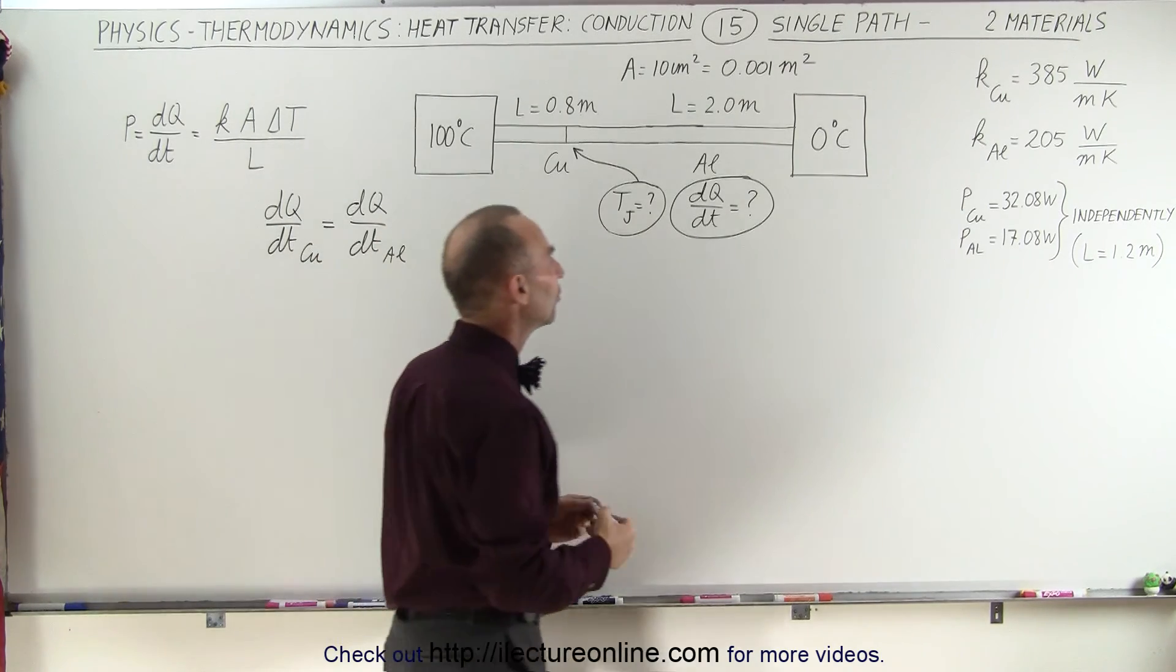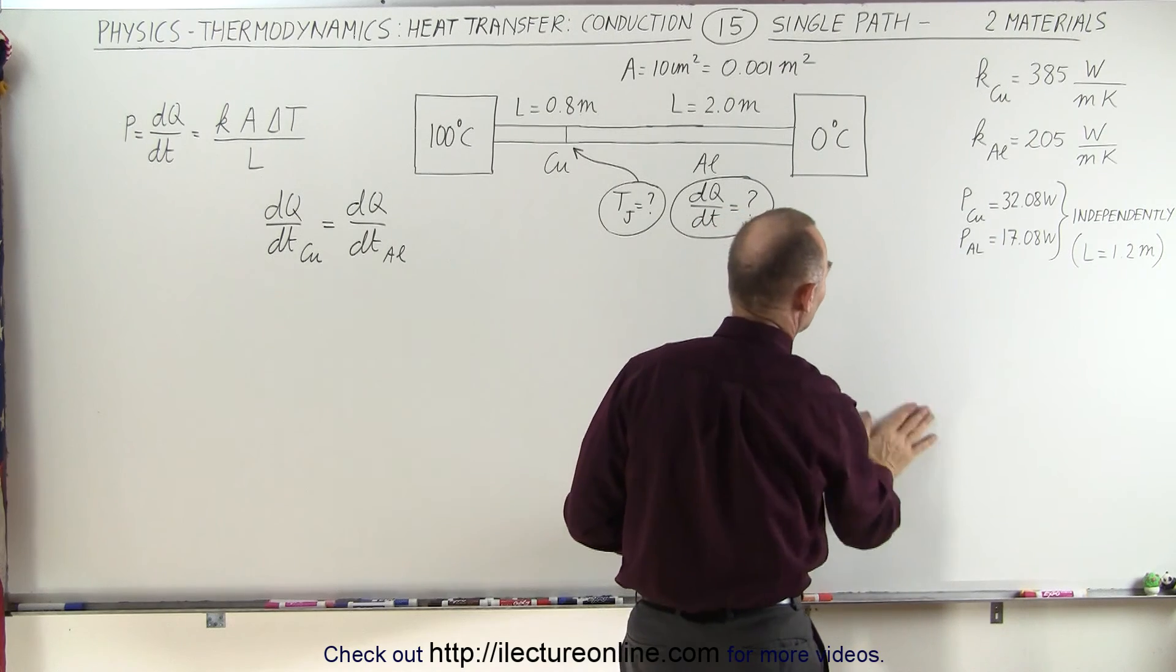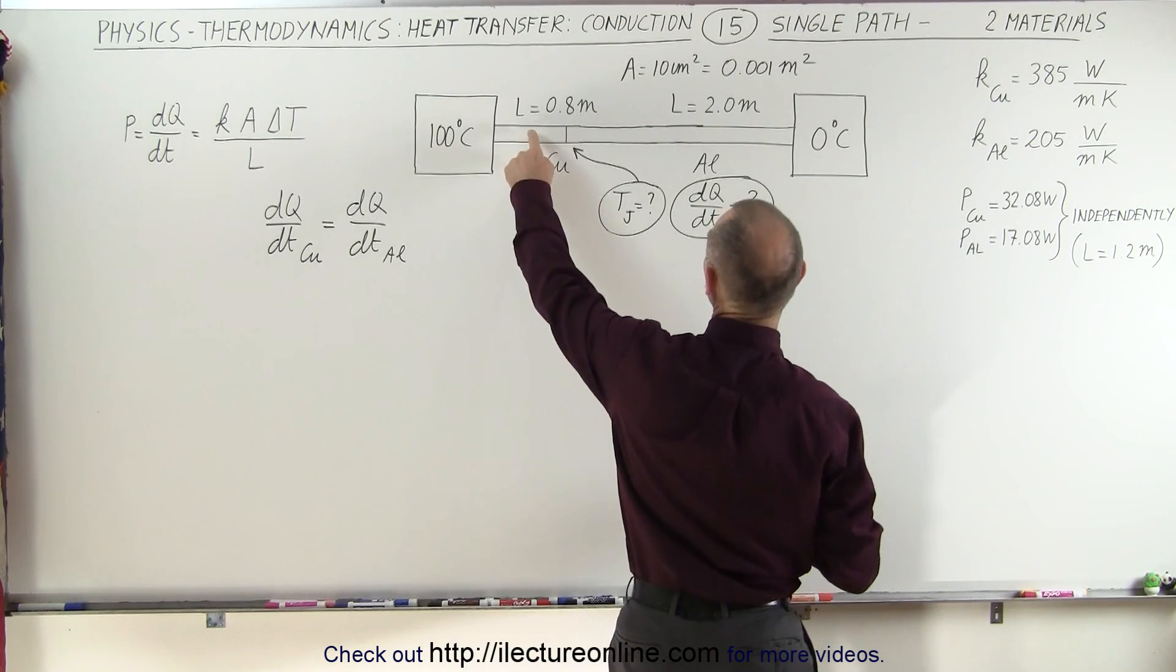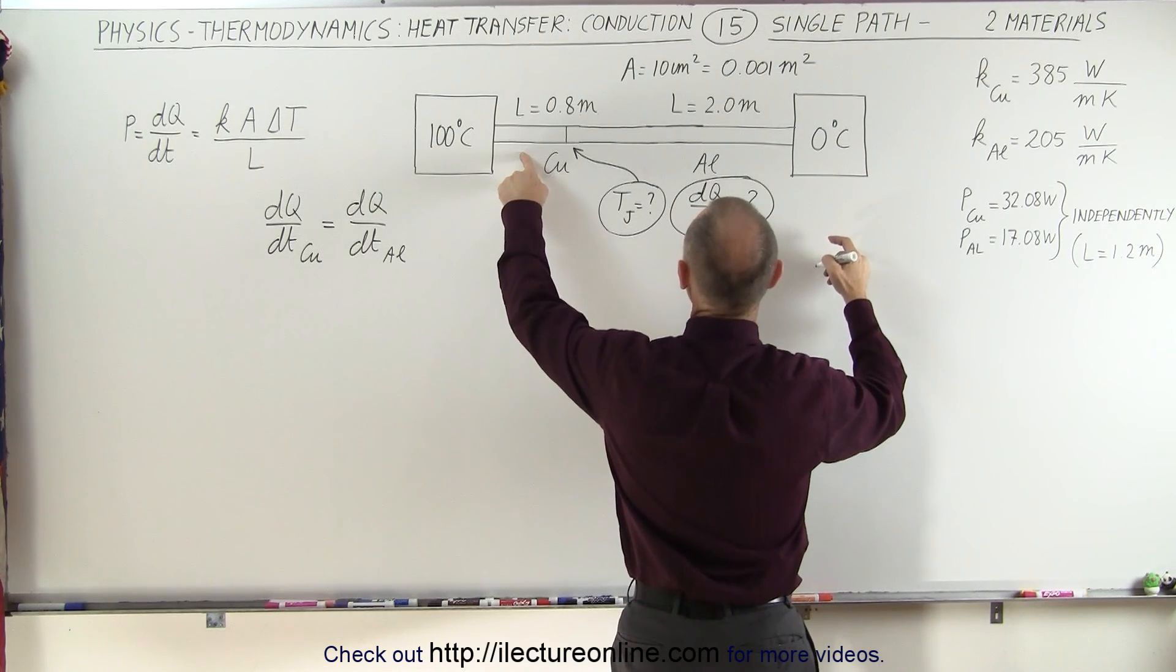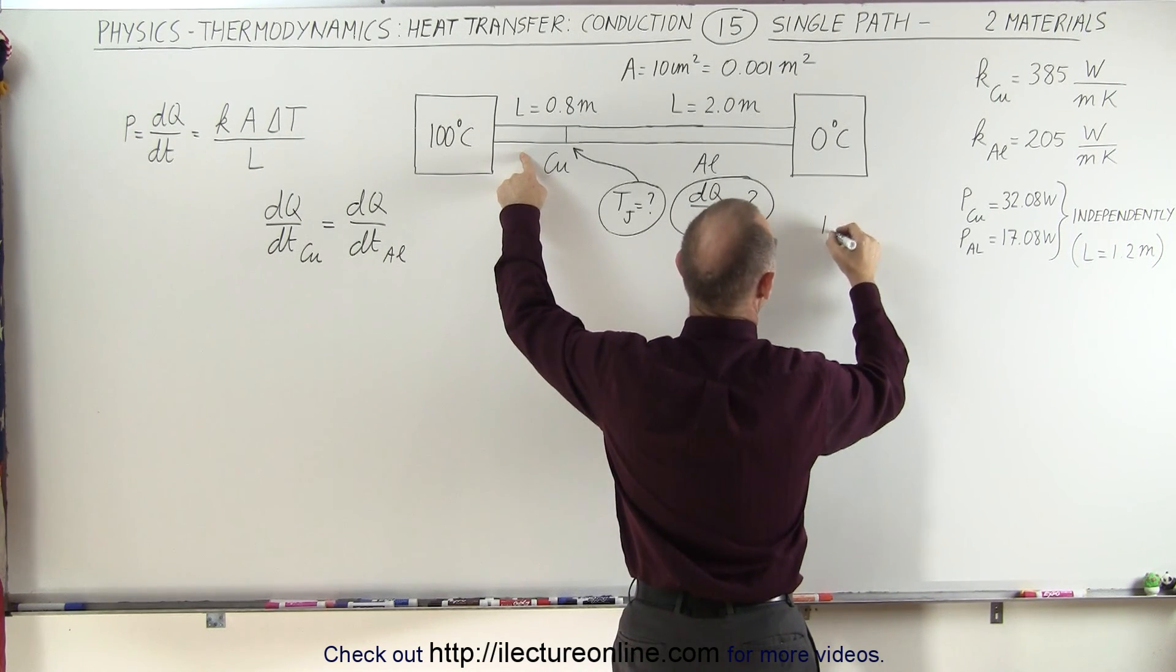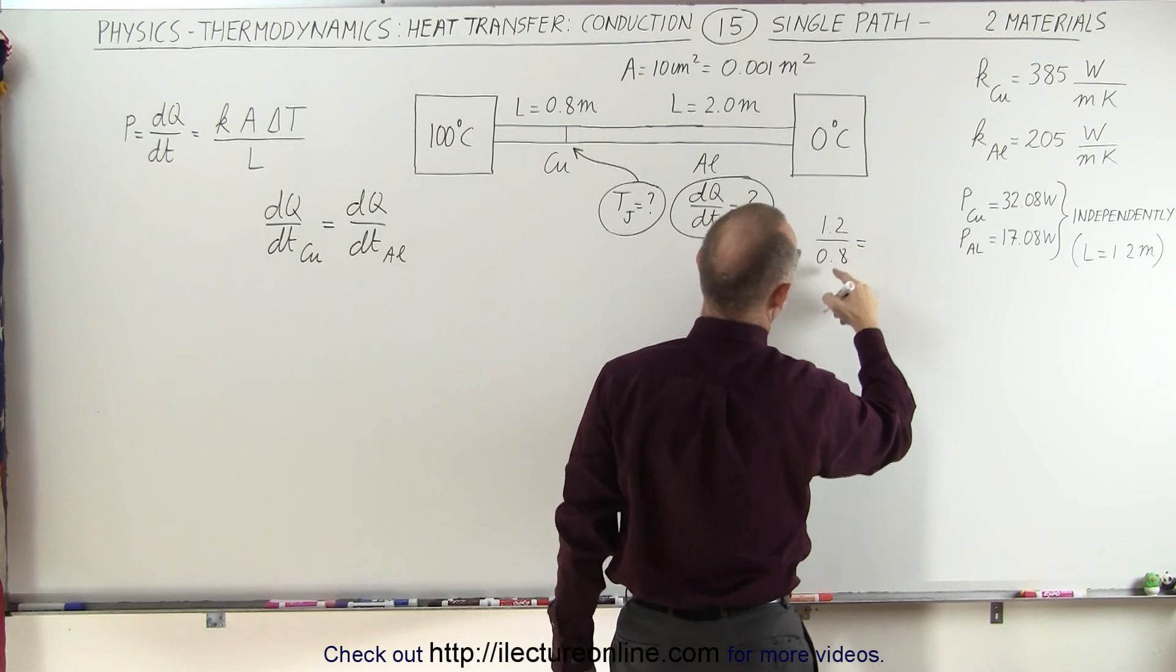Well what we need to do is we need to come up with the factors that we put in front of the P's in our equation right here. For example, if the length is 0.08, that means the factor for the copper section is going to be 1.2 divided by 0.8 and that is equal to 1.5.